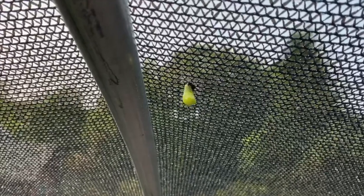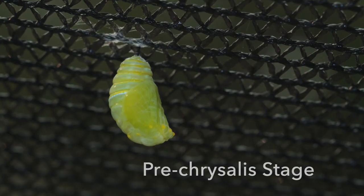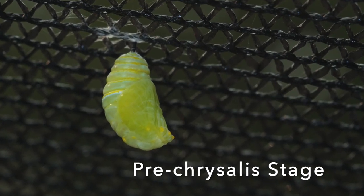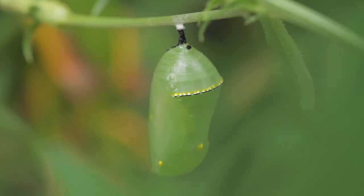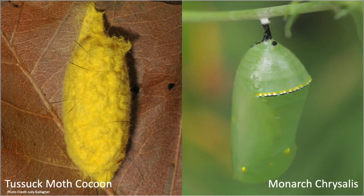Inside the chrysalis, the caterpillar undergoes an incredible transformation into a butterfly known as metamorphosis. The process involves the caterpillar digesting itself, then using rapid cell division to create all the features of the adult butterfly. While butterfly caterpillars make chrysalises, moth caterpillars make cocoons. A cocoon is also a pupa, but is made of the silky material that moth caterpillars weave around themselves before pupating.